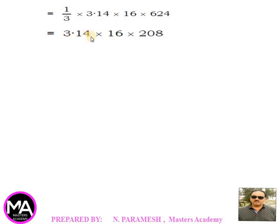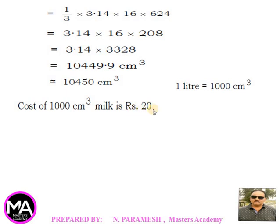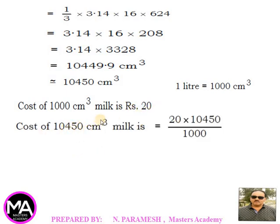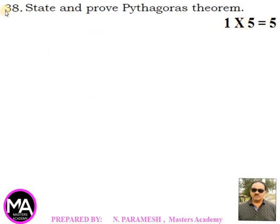The result gives approximately 10,449.9 cm³ ≈ 10,450 cm³. Since 1 liter = 1000 cm³ and cost is rupees 20 per liter, cost = 20 × 10,450/1000 = rupees 209. Therefore the cost of milk to completely fill the container is rupees 209.